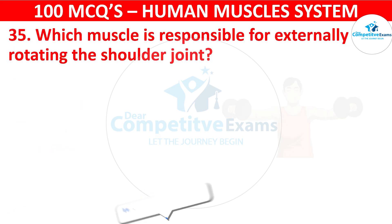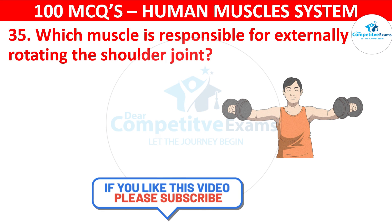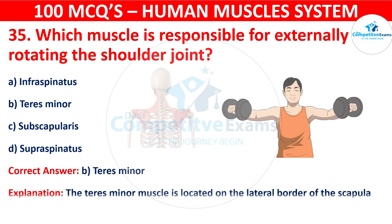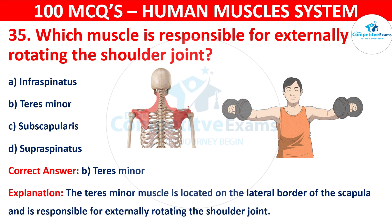Question 35. Which muscle is responsible for externally rotating the shoulder joint? Your options are Infraspinatus, Teres minor, Subscapularis, or Supraspinatus. The correct answer is B, i.e. Teres minor. The Teres minor muscle is located on the lateral border of the scapula and is responsible for externally rotating the shoulder joint.